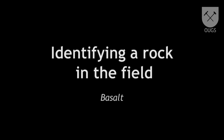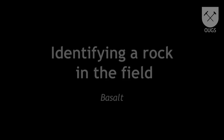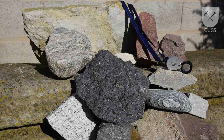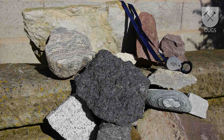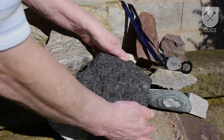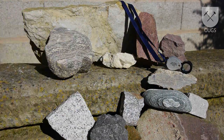There are three main types of rock which are visible on the Earth's surface: magmatic, sedimentary, and metamorphic. We are going to do some basic triage and see if we can classify a rock sample.